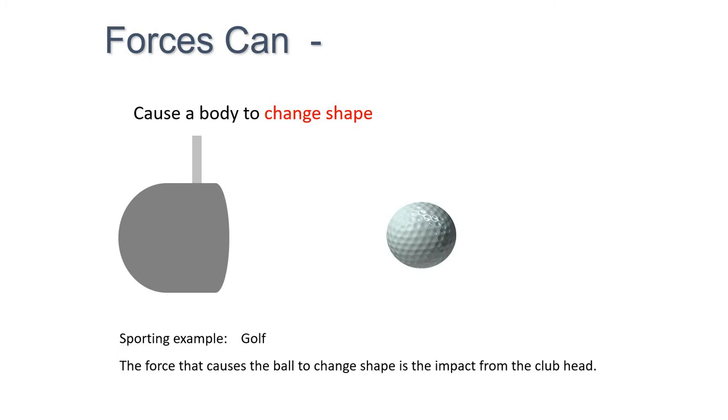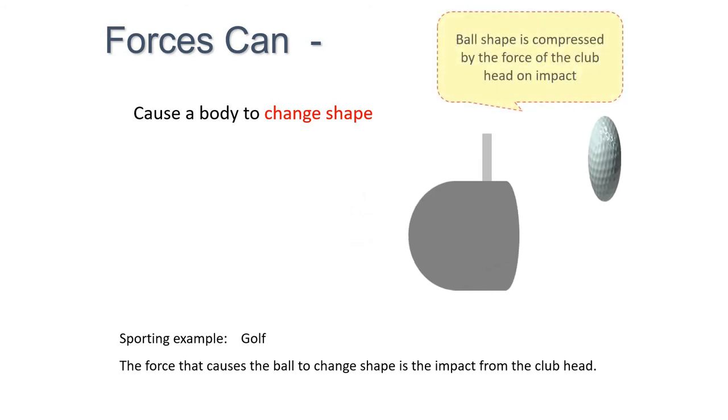Changing shape. So a golf ball, once it is hit, the impact of the club head will actually cause the golf ball to distort slightly before it moves. The ball shape will be compressed by the force of the club head on impact.